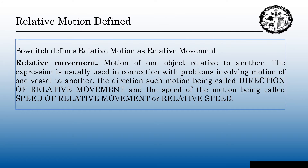Relative motion defined. In the American Practical Navigator, Volume 2, Bowditch defines relative motion as relative movement — motion of one object relative to another. The expression is usually used in connection with problems involving motions of one vessel to another, the direction of such motion being called direction of relative movement, and the speed of relative motion called speed of relative movement or relative speed.